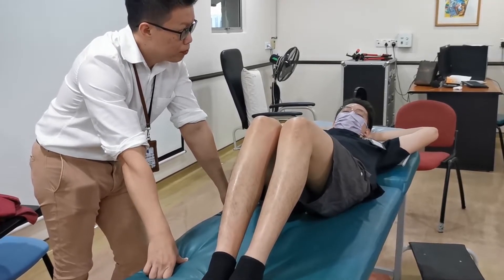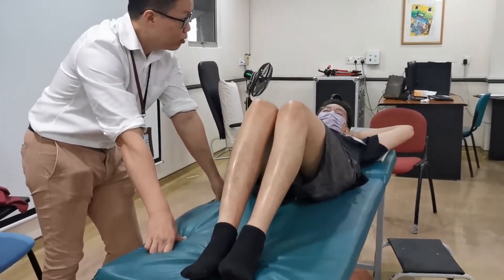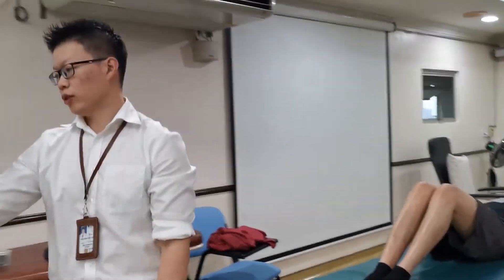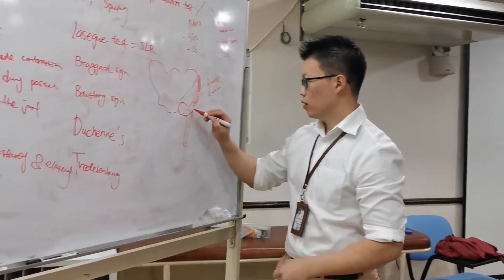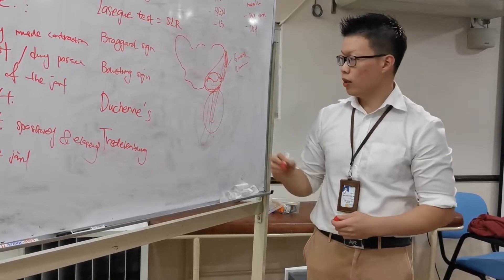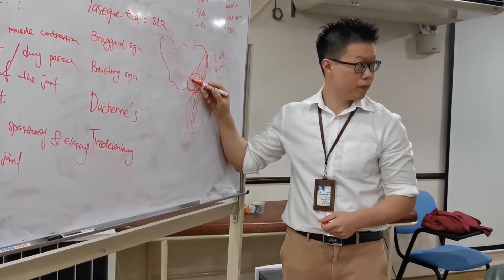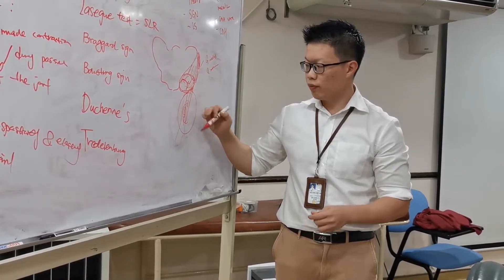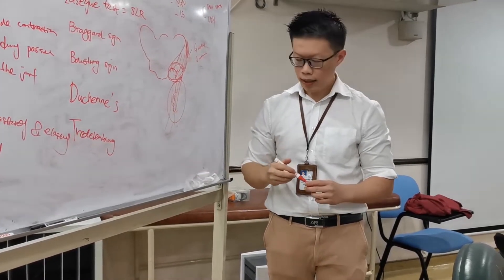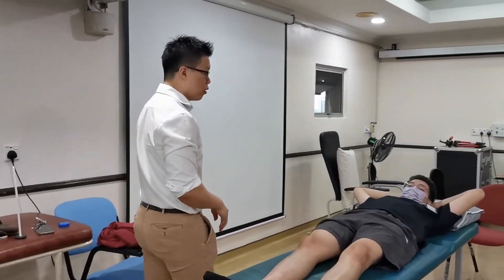If you know the shortening is coming from the femur, you then want to know whether it is supratrochanteric or infratrochanteric. Supratrochanteric means the shortening is above the greater trochanter — for example, neck of femur fracture or dislocation of the hip. Infratrochanteric means the shortening is below the greater trochanter — for example, a femoral shaft fracture with malunion or nonunion.